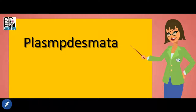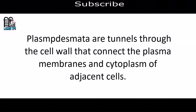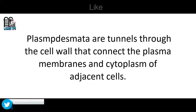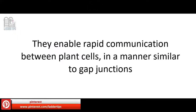Plasmodesmata are tunnels through the cell wall that connect the plasma membranes and cytoplasm of adjacent cells. They enable rapid communication between plant cells in a manner similar to gap junctions.